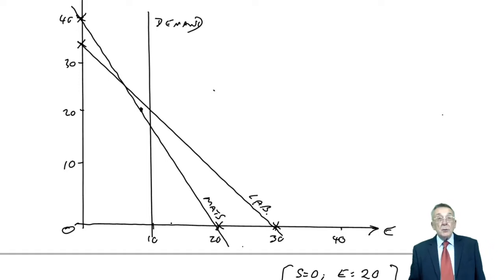The non-negativity constraints we don't need to draw. The axes themselves. We can't have minus E. We can't have minus S. Well, there are constraints.